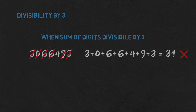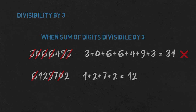That was a convenient example, so let's see another: 6,129,702. We ignore 6, 9, and 0, and we are left with 1+2+7+2, which is 12 — divisible by 3. We can go even further with shortcuts: you see 1 and 2 here. You can either treat it as 12 or immediately sum it to 3. Either way you get a number divisible by 3, so you can ignore that pair in the sum too.